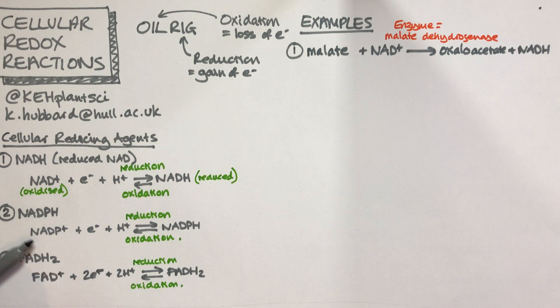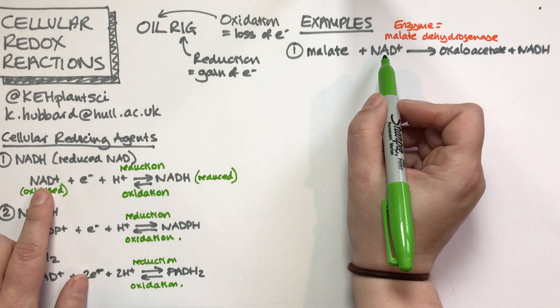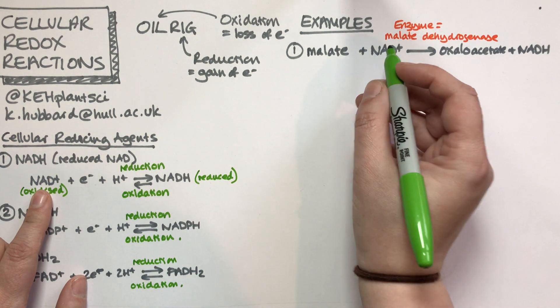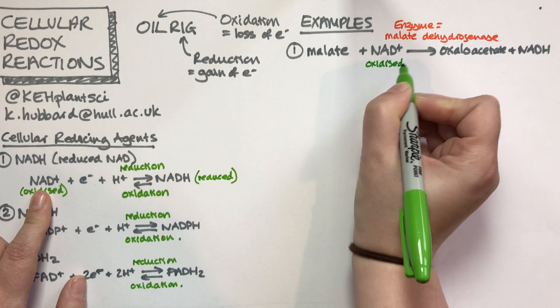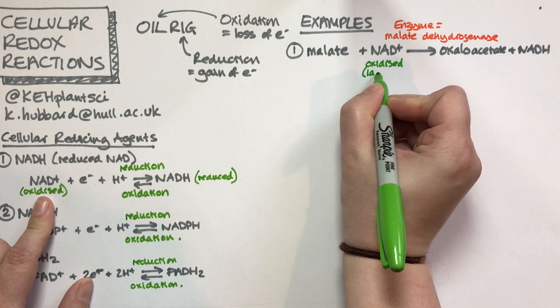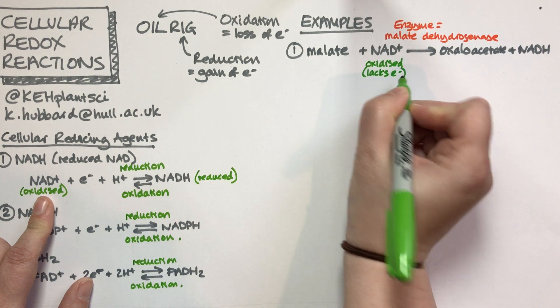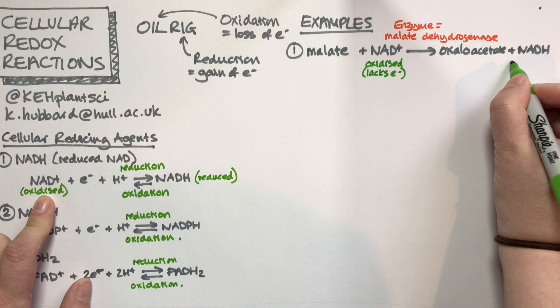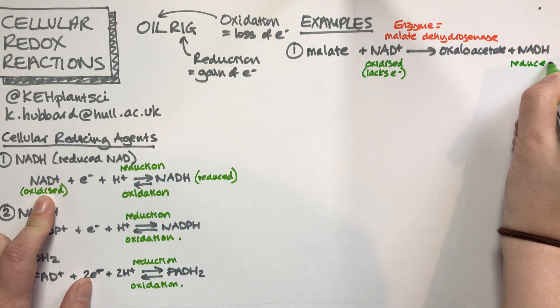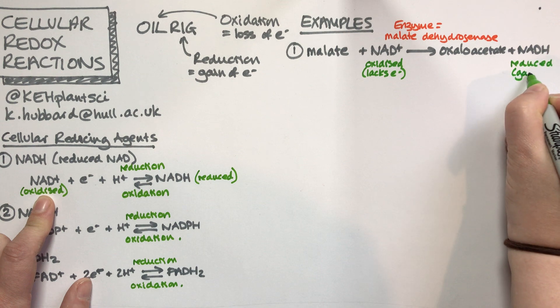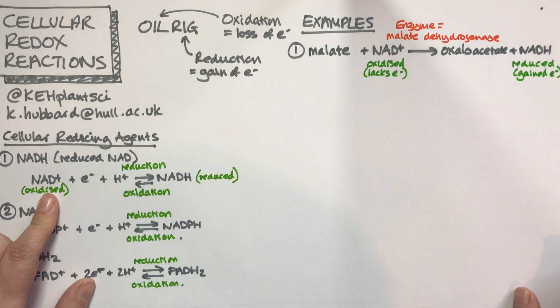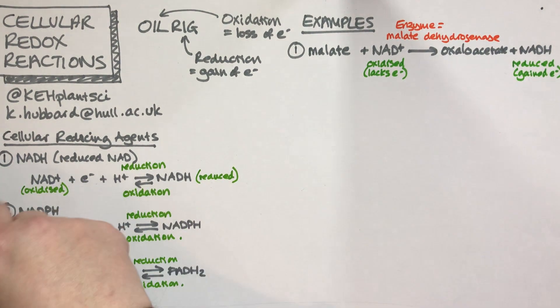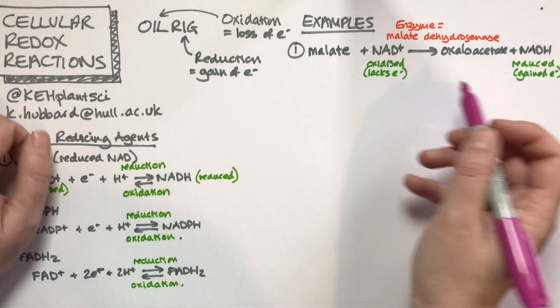Let's work through this reaction to work out what's happening. Start with the NAD because we recognize that. The NAD is starting off oxidized, so it lacks electrons, and it ends up being reduced. We've gone from oxidized to reduced.